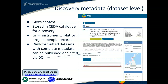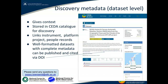So we have two types of metadata. One we call discovery metadata, which is at the dataset level and gives context to your dataset. We store this metadata in the CEDA data catalogue and it allows for discovery of your data through the CEDA catalogue and through wider portals. It includes links to instruments and platform records — platforms being the location, the aircraft, the ship that measurements have been made on, or the model. It'll provide information about the project the data was collected for, which may well affect the data itself, and it connects to the people involved, the authors of the dataset and so on.